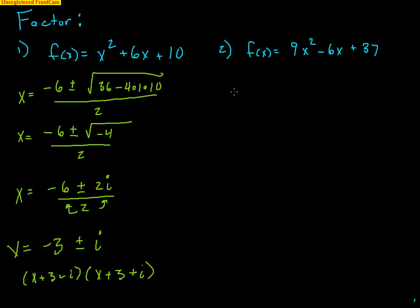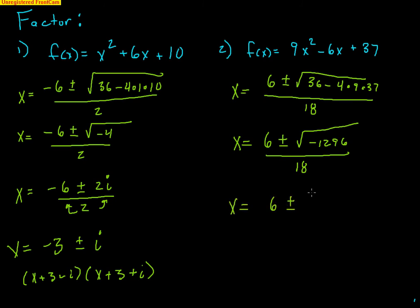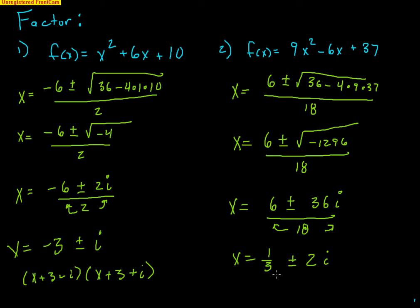Example 2: 9x² − 6x + 37. Use the quadratic formula: x = (6 ± √(36 − 4·9·37)) / 18 = (6 ± √(−1296)) / 18. The square root of 1296 is a perfect 36, so √(−1296) = 36i. Then x = (6 ± 36i) / 18. Dividing everything by 18: 6/18 = 1/3 and 36/18 = 2, giving zeros x = 1/3 ± 2i.